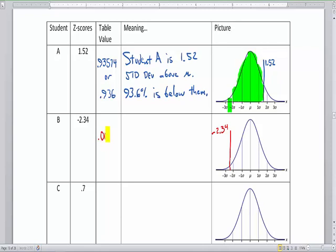So we got our table value from z equals negative 2.34. From the table, this is 0.00964, or we're going to round this to three decimals. The 6 pushes the 9 to a 10, so this is 0.010.